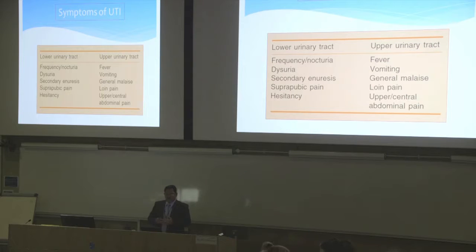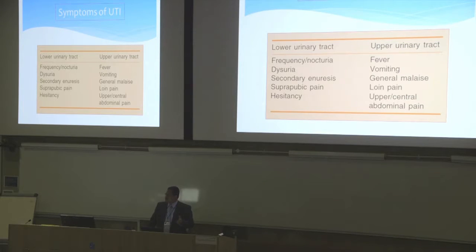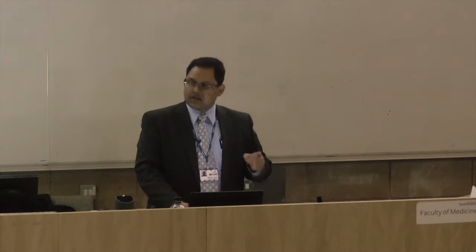Symptoms of lower urinary tract infection include frequency, nocturia, dysuria, stinging or burning, secondary enuresis, urgency, incontinence, suprapubic pain, and hesitancy. Upper urinary tract infection — pyelonephritis — presents with systemic illness: fever, vomiting, general unwellness, and loin or abdominal pain. Treatment differs between the two, and untreated lower tract infection can manifest as upper tract infection.